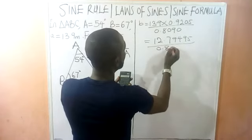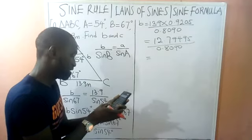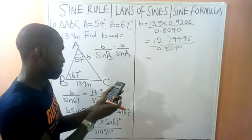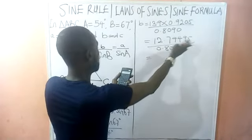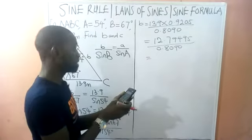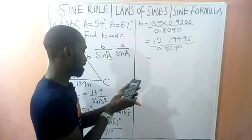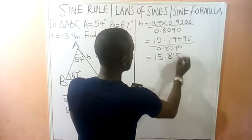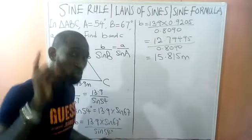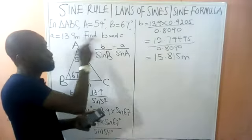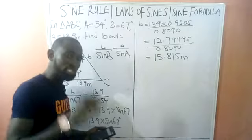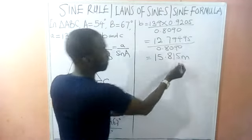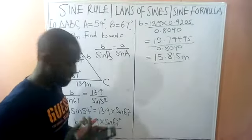And sin 54° = 0.8090. So b = (13.9 × 0.9205) / 0.8090. Let's confirm: 13.9 × 0.9205 = 12.7950. Dividing by 0.8090 gives us approximately 15.815. Do not approximate until you are asked to do so, so we write b = 15.815 meters.